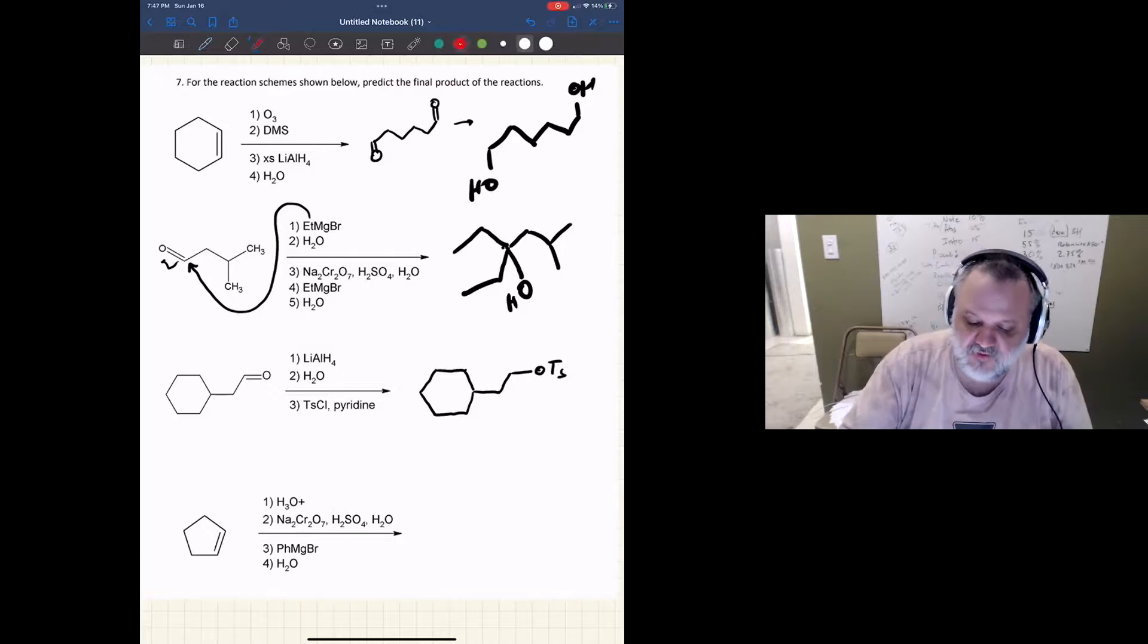Now I think this is trying to remind us that one way to turn an alcohol into a really good leaving group is to turn it into a tosylate ester, and that last step is the reaction that we do in order to do that.